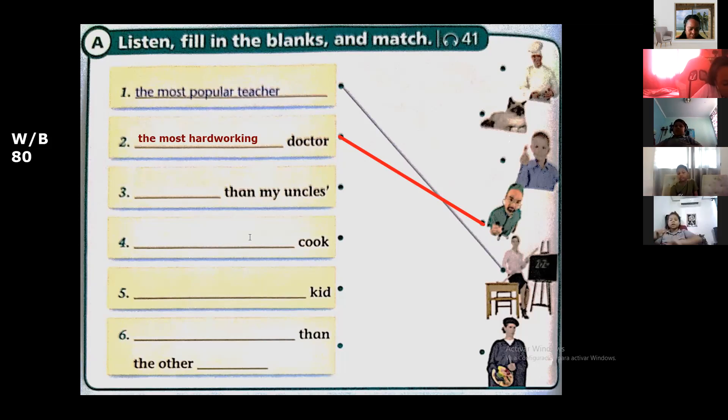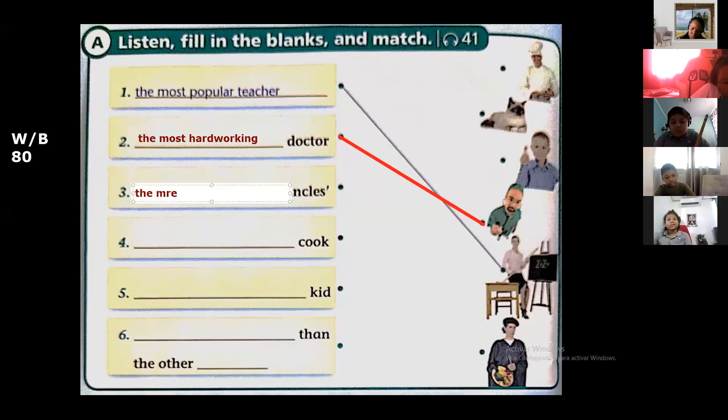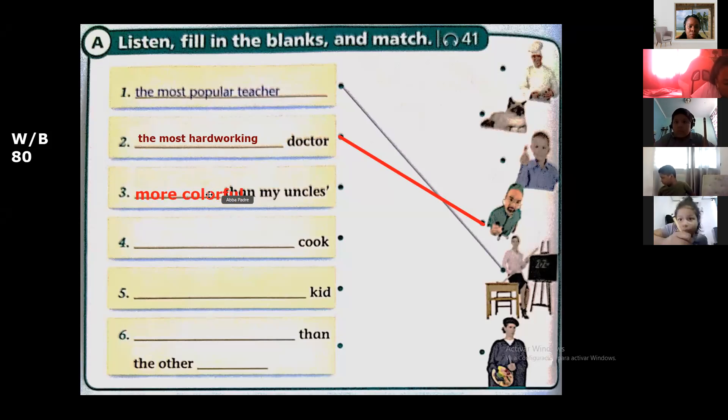Okay, number three. My father draws very well. His pictures are more colorful than my uncle's pictures. Okay, my father is the most, the more colorful. More colorful, more colorful. La mano lleva more porque more más es que more colorful. More colorful than my uncle's. O sea que el papá de él pinta más colores, es más colorido pues que el tío.